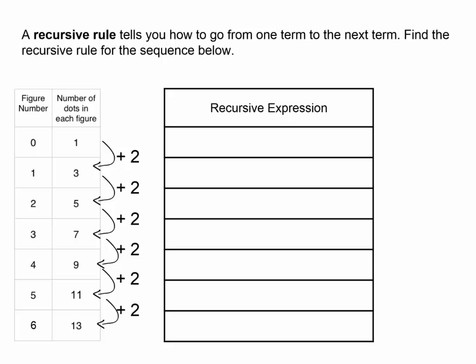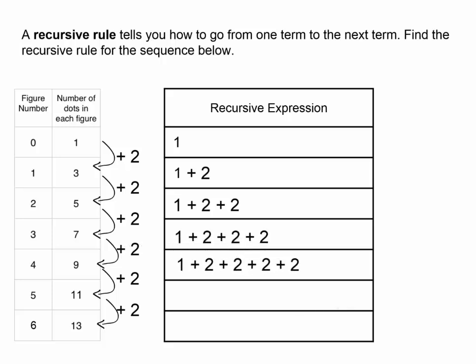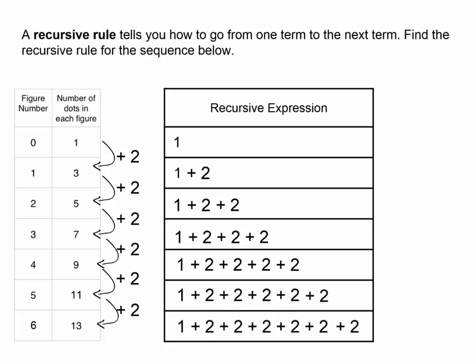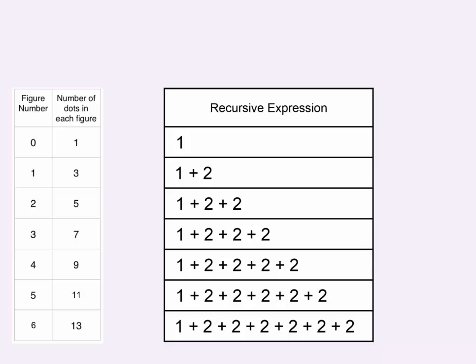Now let's write expanded expressions for each figure so we can write the rule a different way. By writing the expressions this way, we can see the building blocks of a rule that will tell us how many dots any figure has, even the 30th figure or the 100th figure. Without this rule, we would need to make a really long table to figure out how many dots are in the 100th figure. The expanded expressions show that we are repeatedly doing the same thing over and over.